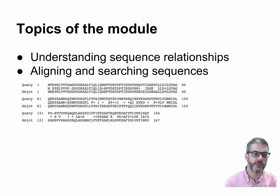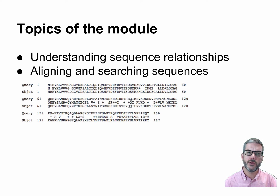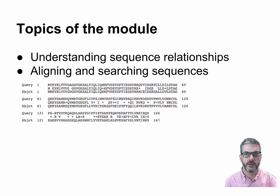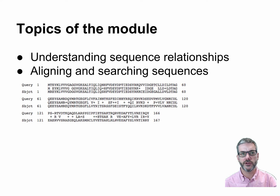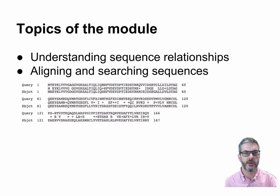In the first half of this module, you'll see a lot of these alignments. We'll learn how to align two sequences to each other, and how to align groups of sequences. We'll learn how to find a needle in a haystack. We'll give you an unknown sequence, and you'll discover how to relate that sequence to known sequences and known biology, by searching databases of millions or hundreds of millions of sequences.